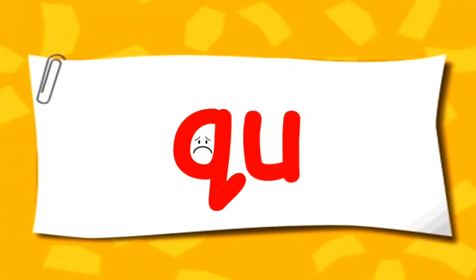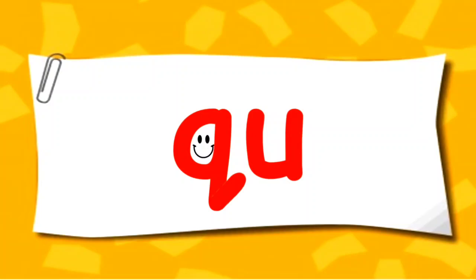Here comes U. And the moment U joins Q, Q becomes so happy because it gets its best friend. U is Q's best friend. And always remember, wherever there is Q in a word, there will always be U. U comes immediately after Q in any word. Together, QU makes the sound QU — the same sound they make. So let's learn a few words where QU appears.